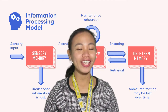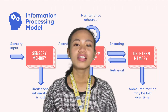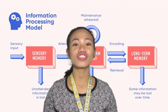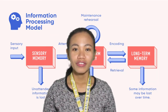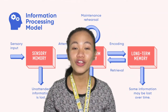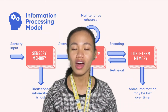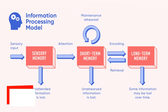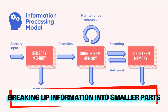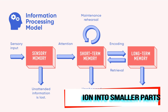Encoding Information into Long-Term Memory: Since we filter out information at each stage of processing, trainers should employ certain strategies to ensure your audience understands a topic in depth. This includes breaking up information into smaller parts. There's only so much information we can take on board at once, so when you're training, you should move at an appropriate pace, giving your learners plenty of breaks and opportunities to process the information.